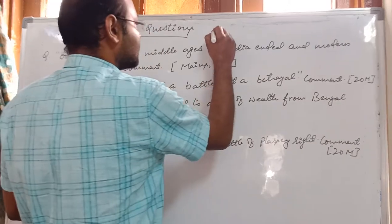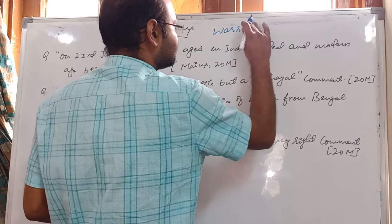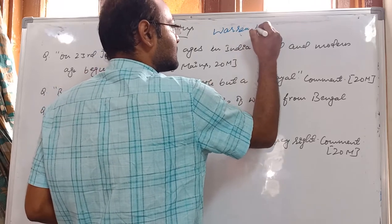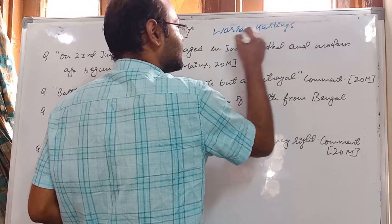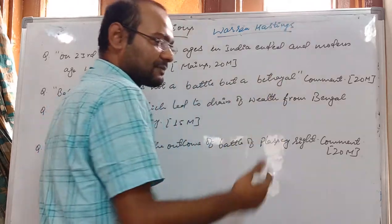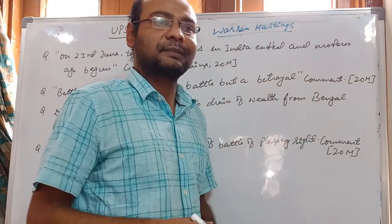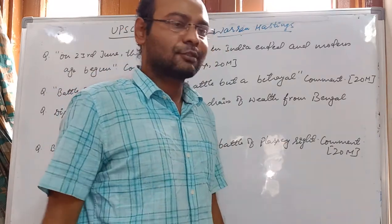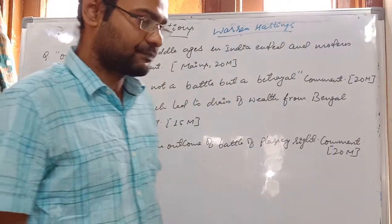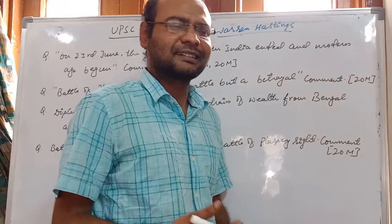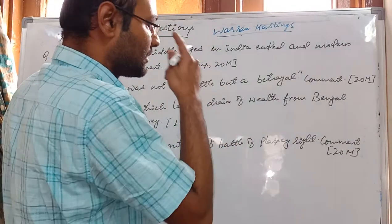Today we will discuss about Warren Hastings. We will first discuss some important governor generals like Warren Hastings, Cornwallis, William Bentick, Dalhousie, etc. After that we will go through various dimensions like land revenue reforms, constitutional developments like the Regulating Act, Pitt's India Act, Charter Act, etc., and the development of education, before moving to the revolt of 1857.